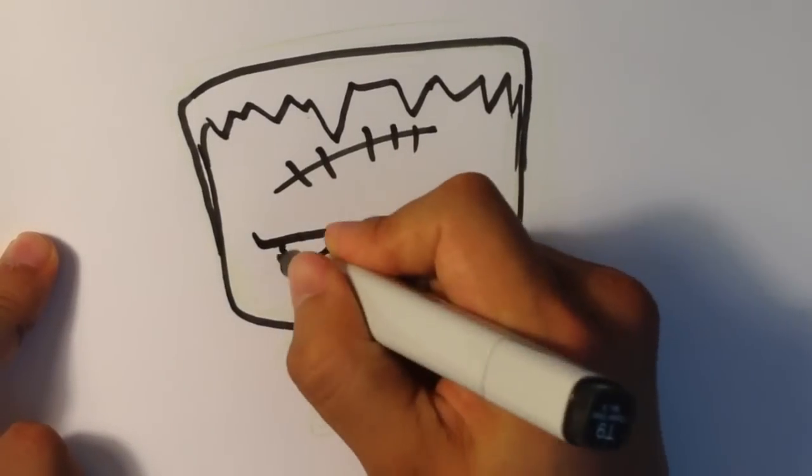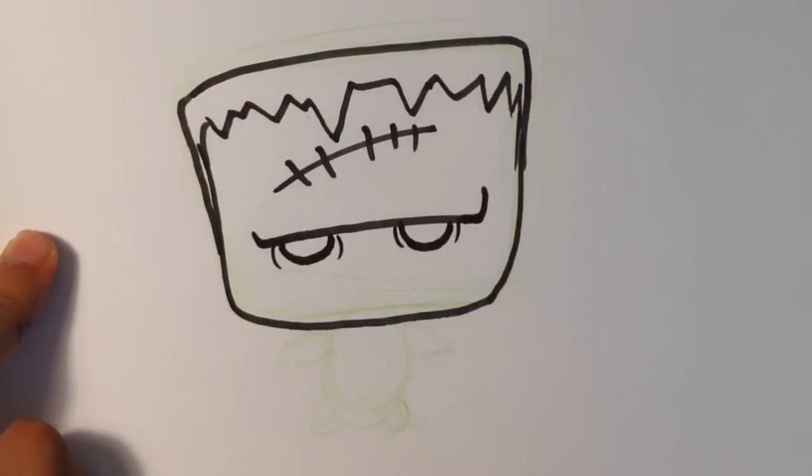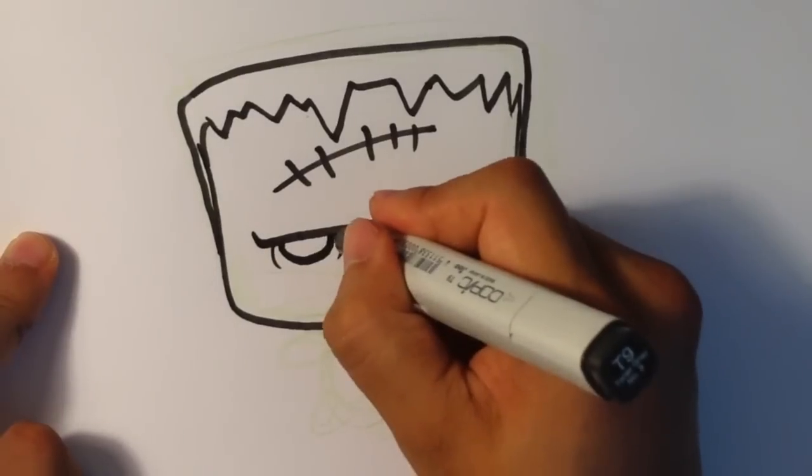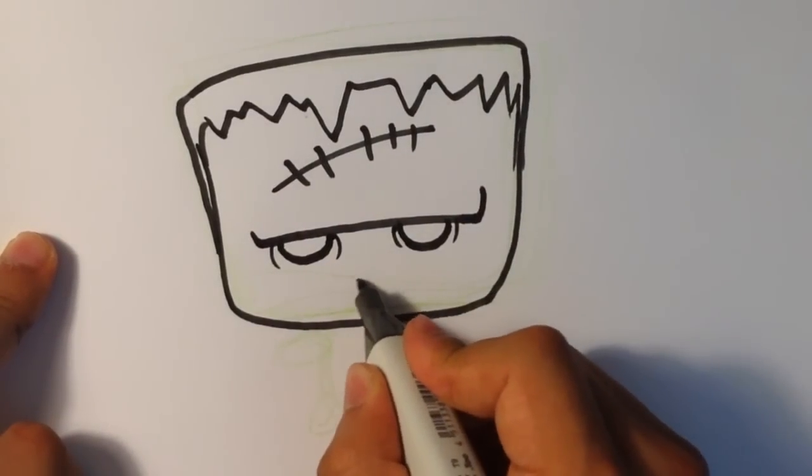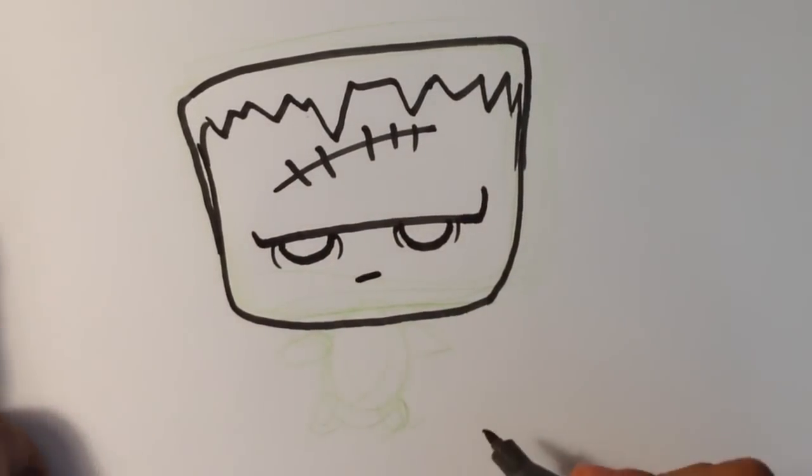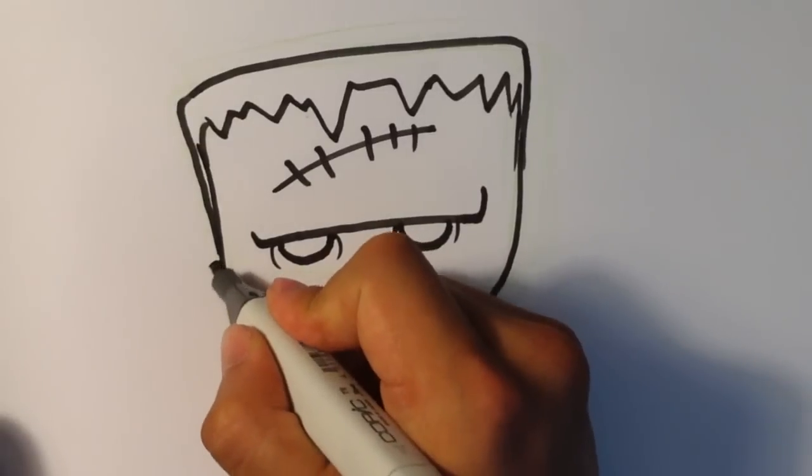Draw his little eyes. Draw some wrinkles around his eyes, but he's kind of maybe angry. And then I'm going to draw his little mouth. And that would be his head. He could draw his ears, too.